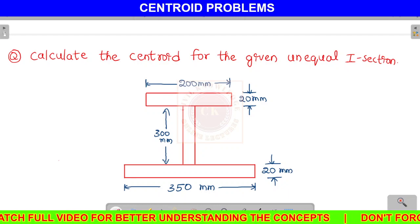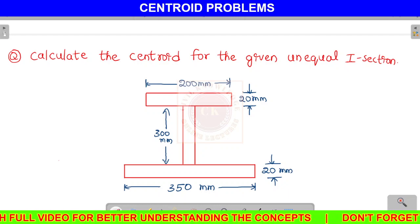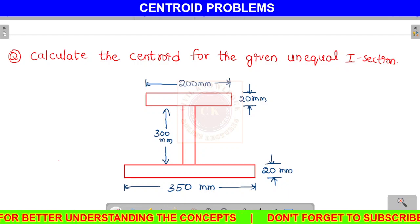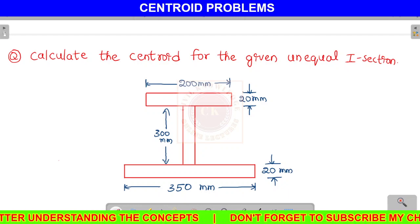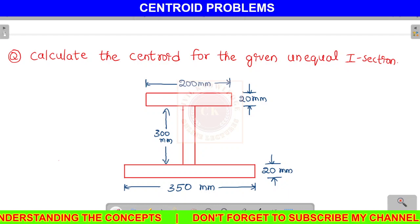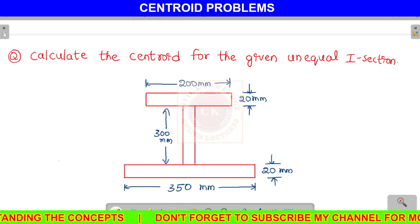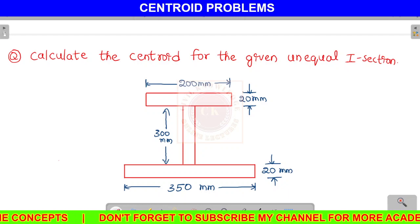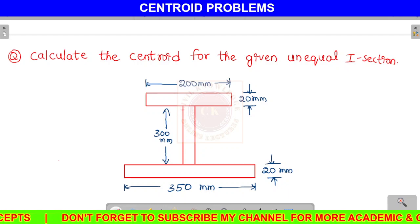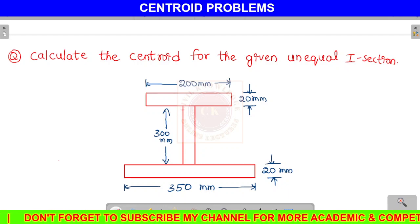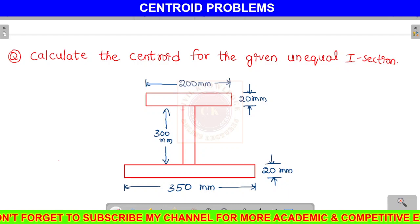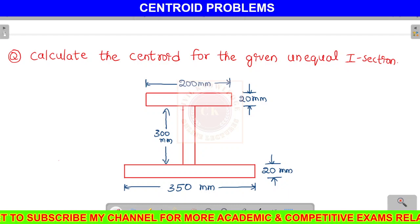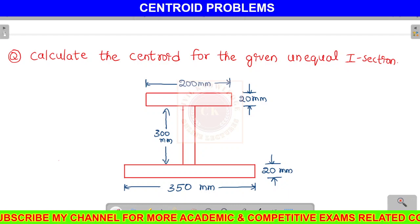Here we have an I-section. It is symmetrical about the y-axis and unsymmetrical about the x-axis. Both axes are symmetric for a regular section, so we have a centroid at width by 2 and depth by 2. But here for the I-section, it is symmetrical about the y-axis and unsymmetrical about the x-axis.